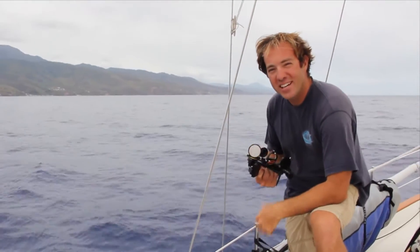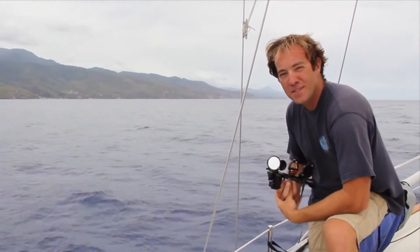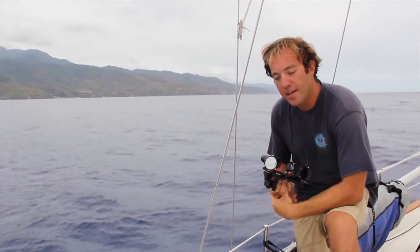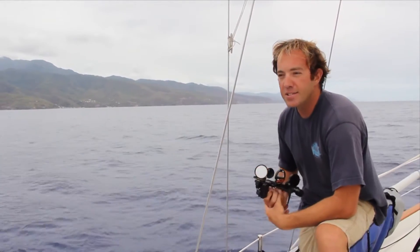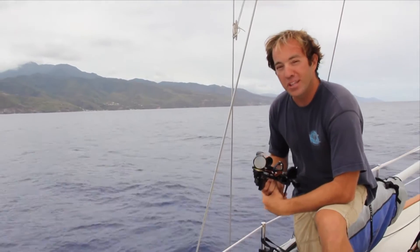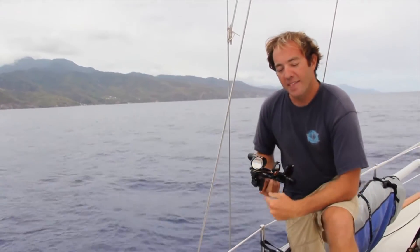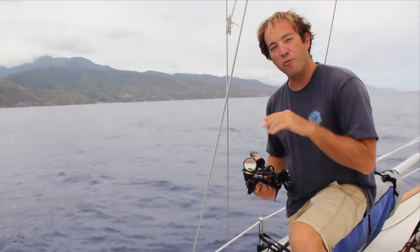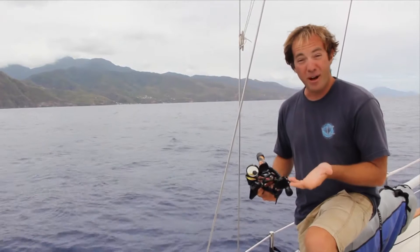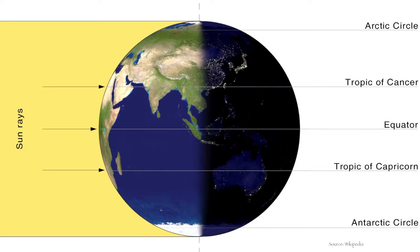I'm here in the lee of Dominica and I'm going to observe the Sun at local apparent noon today, because today is a special day — it's March 20th, which is the vernal equinox. That means the Sun is directly over the equator right about now. On the equinox, the Sun's geographic position is directly above the equator.